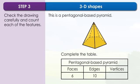A vertex is the point where edges meet. There are five vertices around the base and one at the top. There are six vertices altogether.